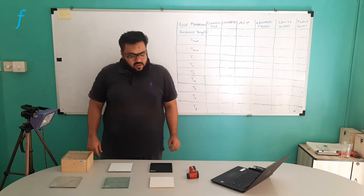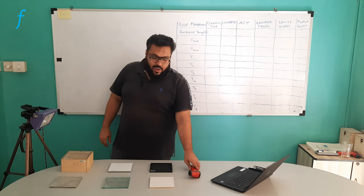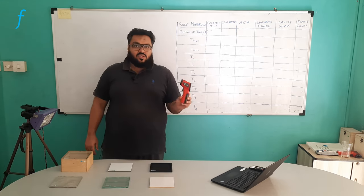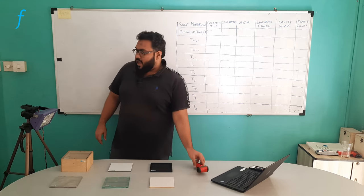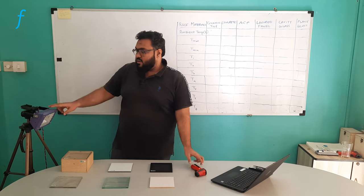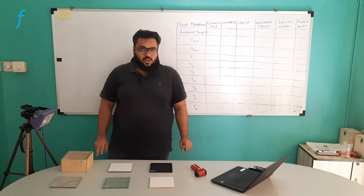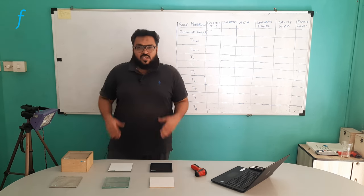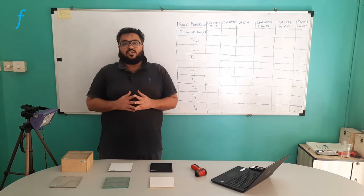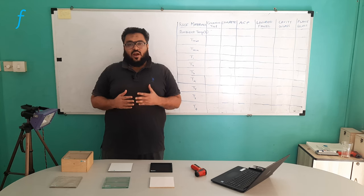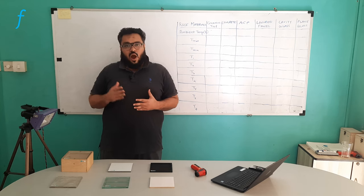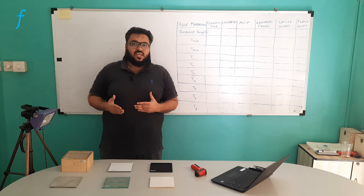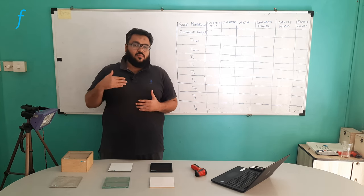Additionally, we will require the temperature gun and the halogen tube. The objective of this experiment is to understand how different materials have different thermal mass.